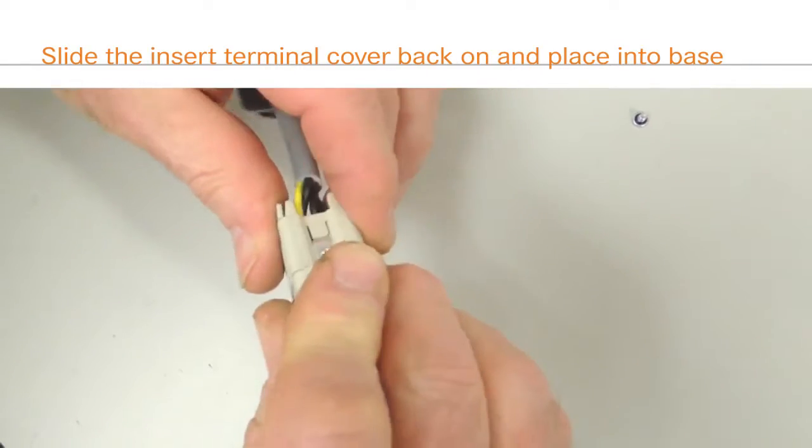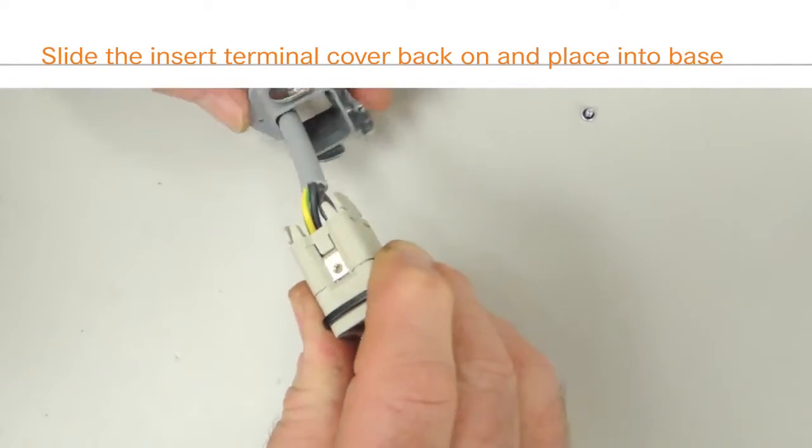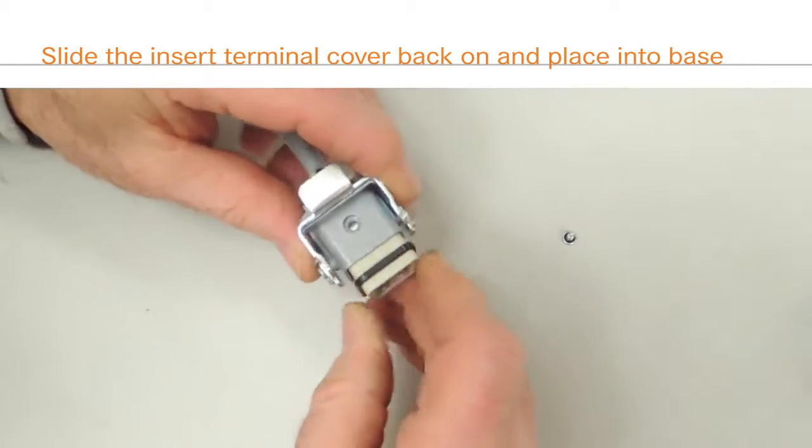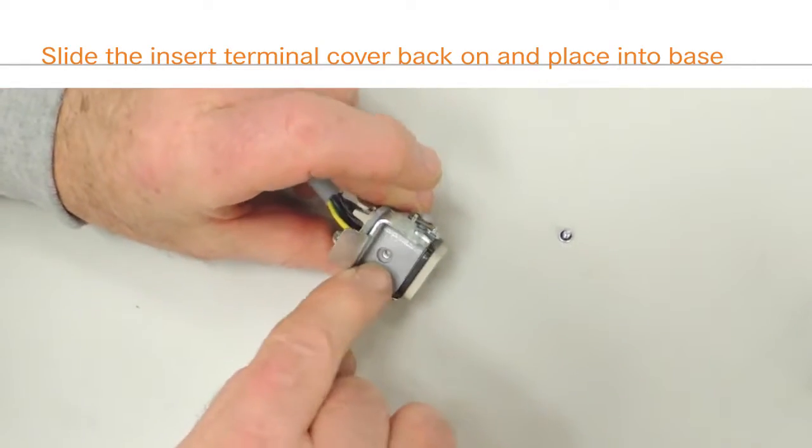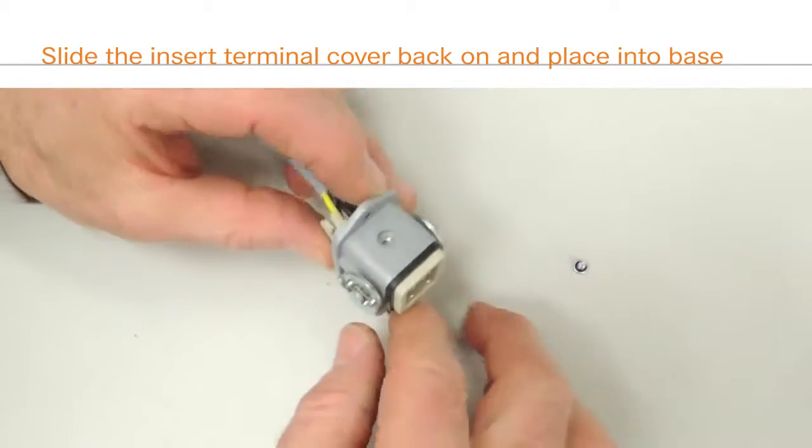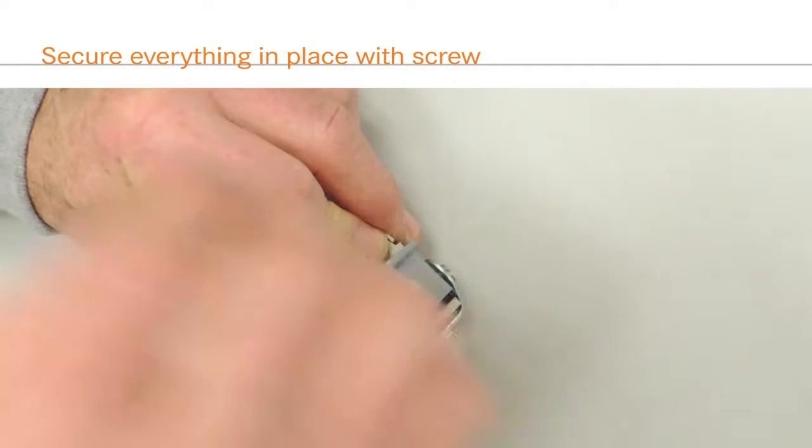Slide the terminal cover back over the terminal screws. Install the insert into the panel mount base with the mounting screw holes aligning. Secure everything in place with the screw.